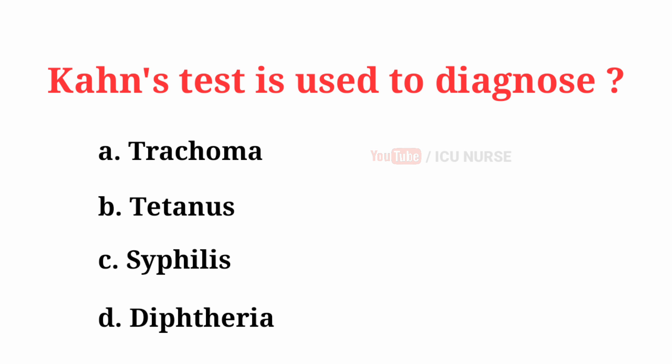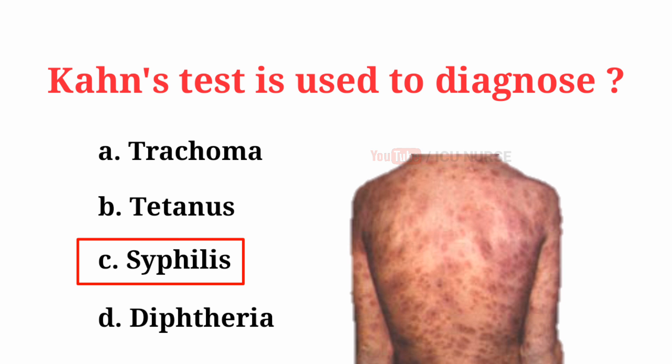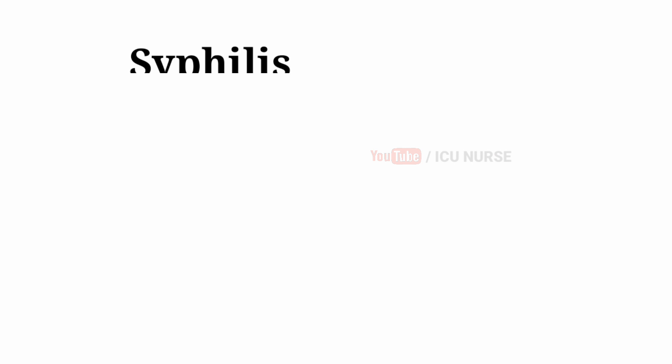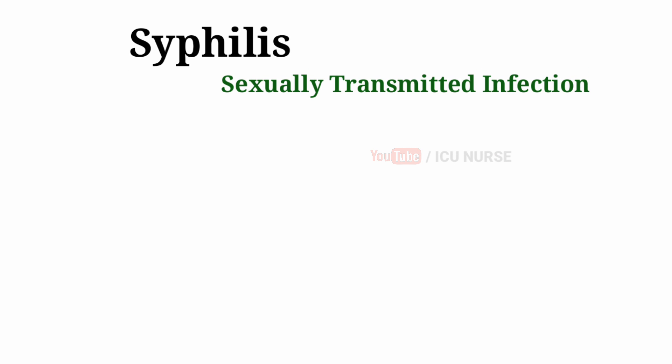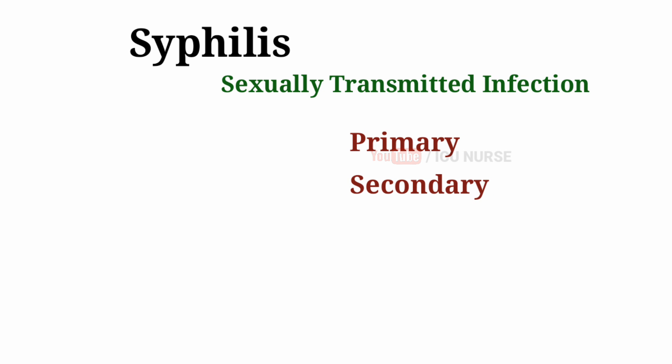Khan's test is used to diagnose... The correct answer is C, Syphilis. Syphilis is a sexually transmitted infection. The signs and symptoms of syphilis vary depending on which of the four stages it presents — that is, primary, secondary, latent, and tertiary.